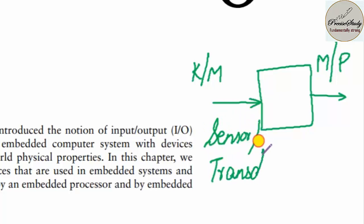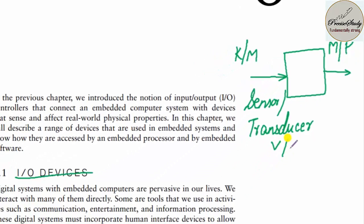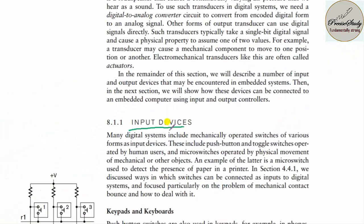What is the basic difference between a sensor and a transducer? A sensor converts a physical quantity to a readable form. A transducer converts a physical quantity to an electrical signal, preferably voltage or current.